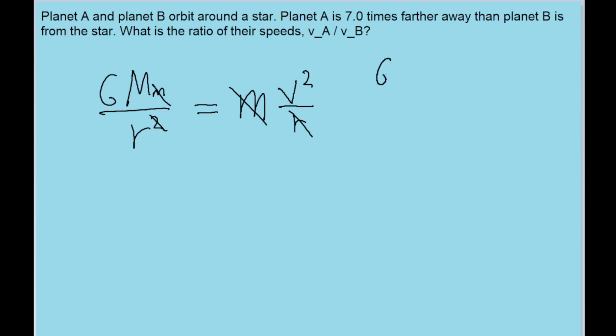So we're just left with big G times big M, the mass of the star, over R is equal to V squared. So our formula for V then can be written as the square root of big G times big M over R.